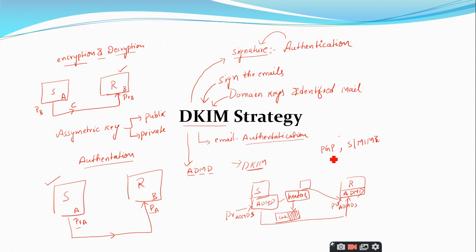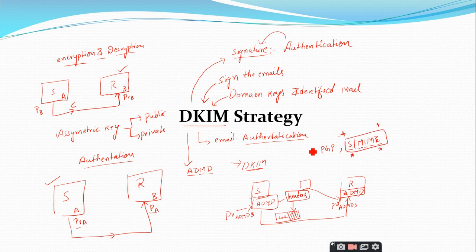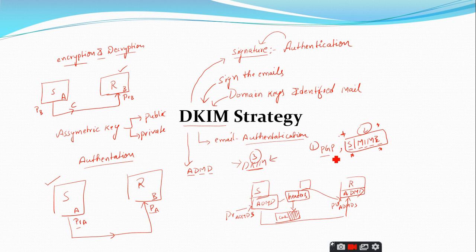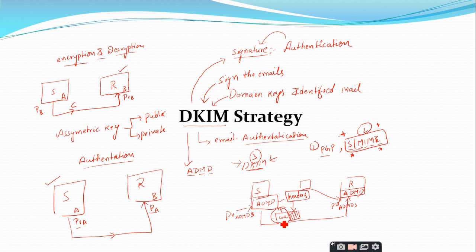The advantage of DKIM is that it signs both the content and the header. In contrast, other strategies like PGP — Pretty Good Privacy — and S/MIME — Secured Multipurpose Internet Mail Extension — concentrate only on the content. They put the signature on the content only, whereas DKIM signs both content and headers, so everything becomes authenticated including the header. That is one key advantage of DKIM.